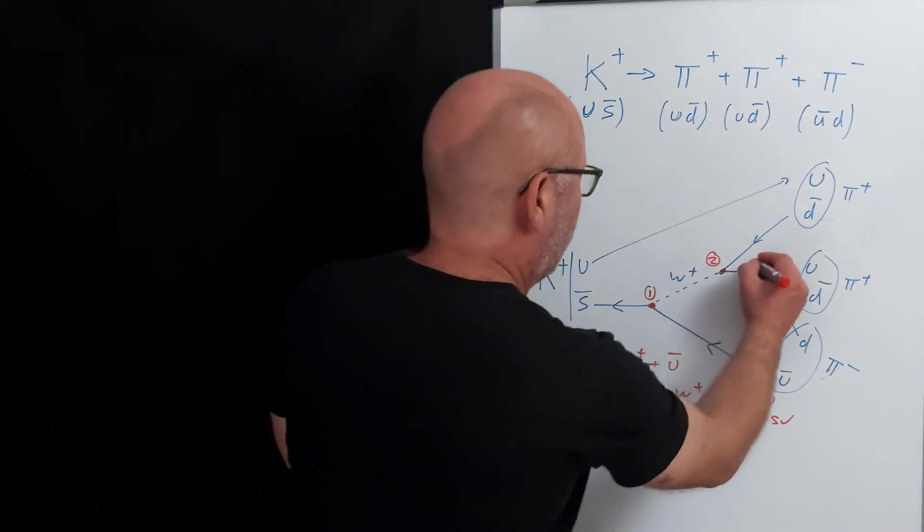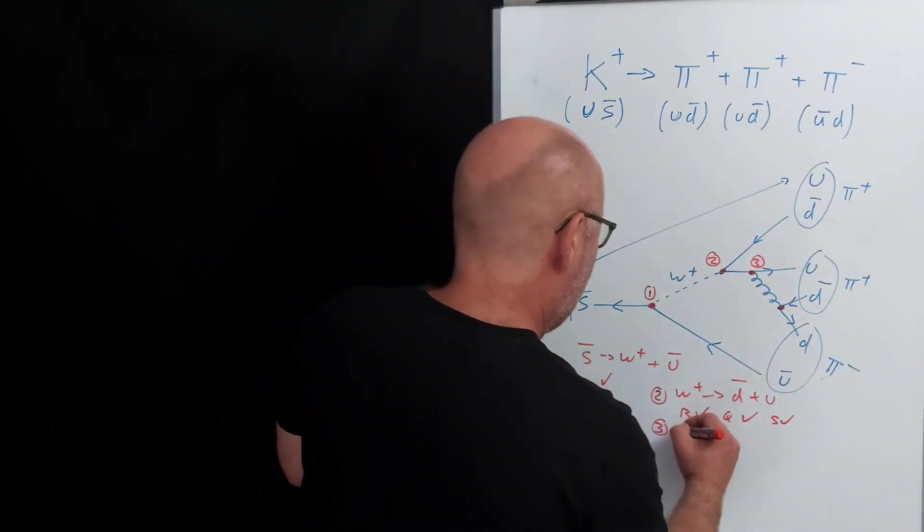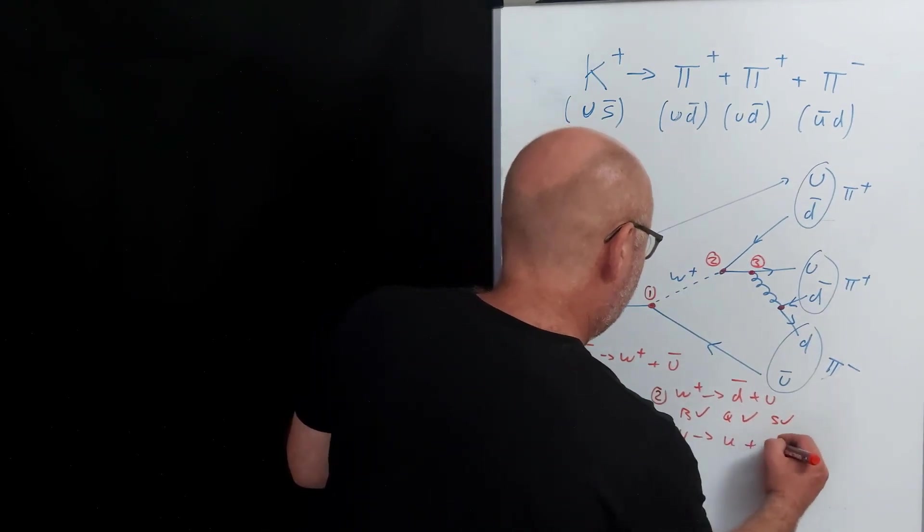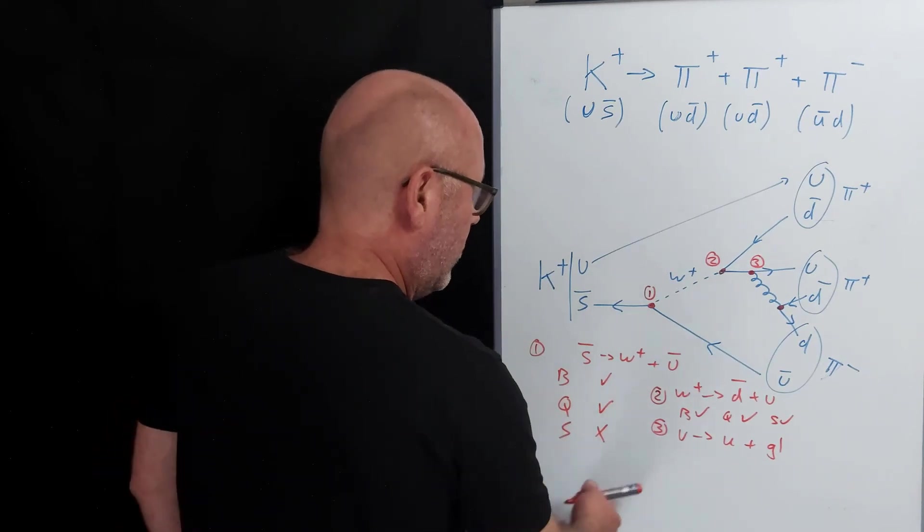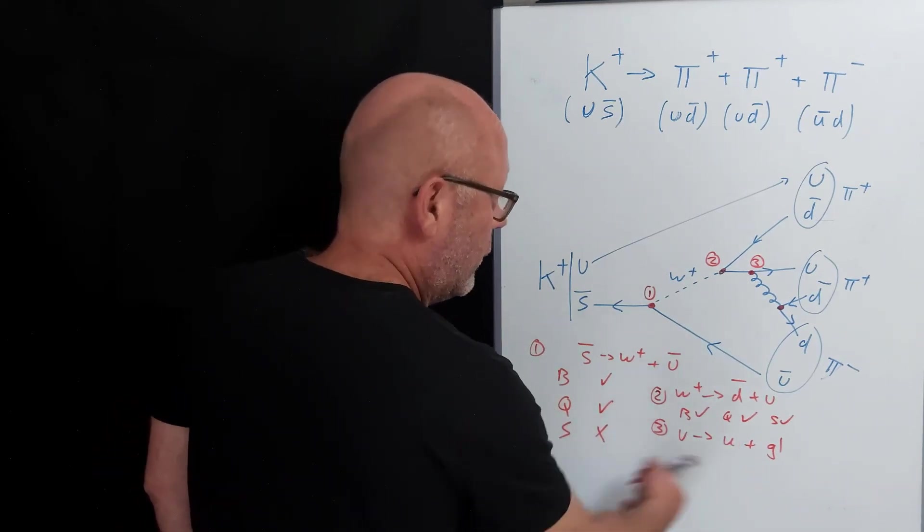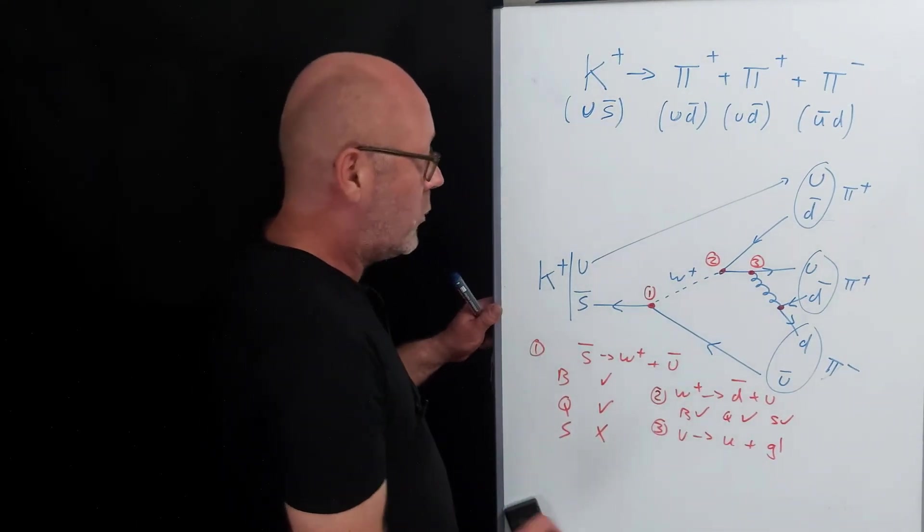Three, so let's consider this one where I have an up gives me an up plus a gluon. Baryon number conserved, charge conserved, the gluon has no charge. Strangeness conserved, lepton number conserved, so we're fine.